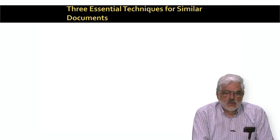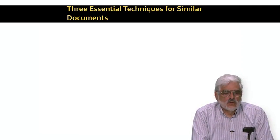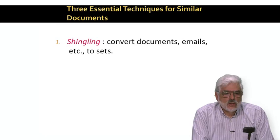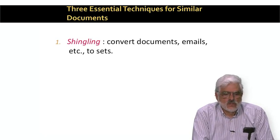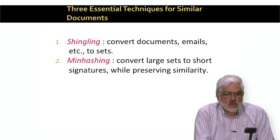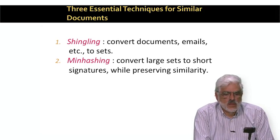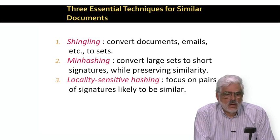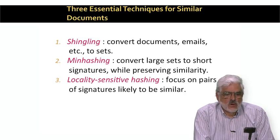As we suggested in the introduction, we're going to learn three important new techniques. Shingling is how we convert documents to sets so that documents that have a lot of text in common will be converted to sets that are similar in the sense that they have a lot of members in common. Then we'll learn about min hashing, which is how we convert sets to short signatures — the important property being that we can look at the signatures of two sets and tell approximately how similar the underlying sets are. And last but not least, we'll learn locality-sensitive hashing, or LSH, that lets us avoid looking at most of the pairs of signatures that do not represent similar sets.